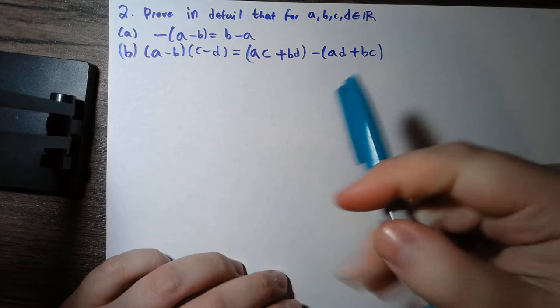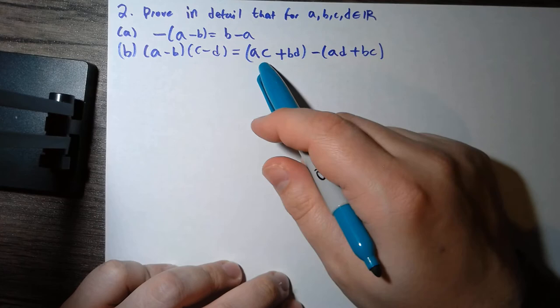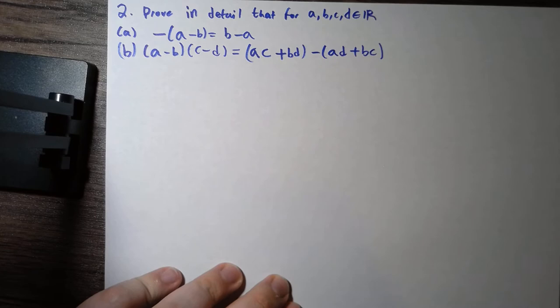All right, so we're going to do problem two out of chapter two of Rosen-Lynch's Introduction to Analysis. We want to prove in detail that if we have real numbers a, b, c, and d: first, negative a minus b is b minus a; second, a minus b times c minus d equals ac plus bd minus ad plus bc.